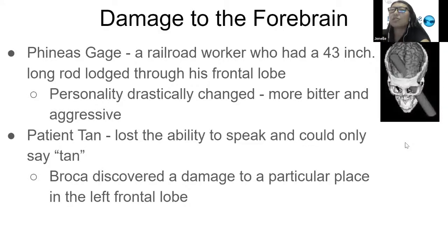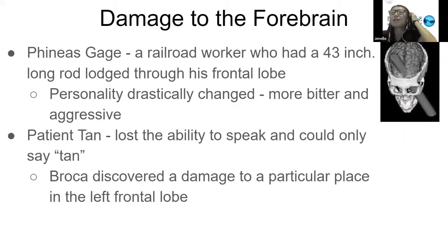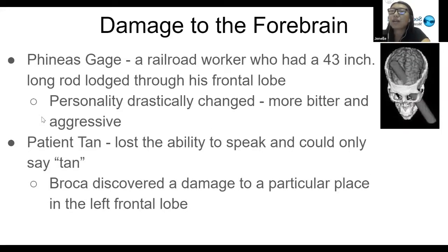I wanted to give a connection of what happens when your forebrain is damaged. There was a case study with a man named Phineas Gage. He was a railroad worker who had a 43-inch long rod lodged through his frontal lobe. As you can see in the diagram to the right, it shows how the rod was positioned in his head. The main effect of having this long rod lodged through his frontal lobe is that his personality drastically changed.